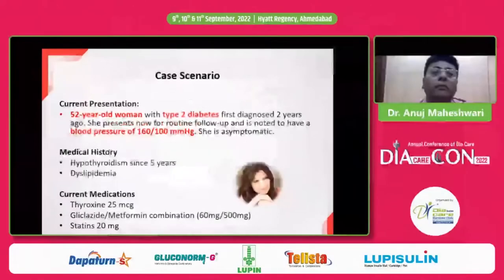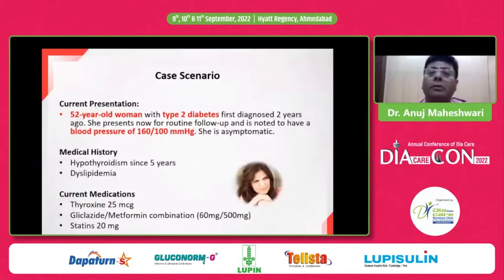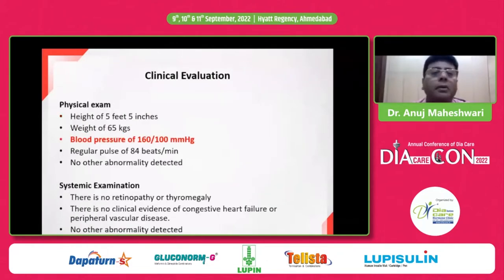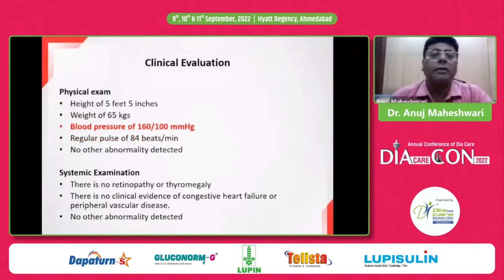Let's start with a case scenario: a 52-year-old woman with type 2 diabetes, first diagnosed two years before she presents now for routine follow-up. She is noted to have a blood pressure of 160/100 mmHg. She is asymptomatic. Medical history includes five years of hypothyroidism and dyslipidemia. She is taking thyroxine 25 mcg, gliclazide-metformin combination 60 mg and 500 mg, and statin 20 mg. On physical examination: height 5'5", weight 65 kg, BP 160/100, pulse 84 bpm, no other abnormality on systemic examination.